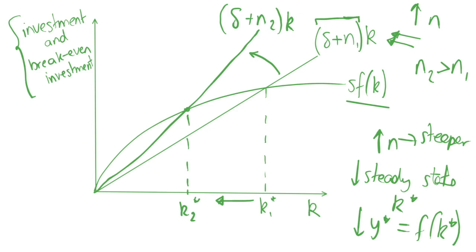Looking at the dynamics, if we're originally at k1 star and we had a steady state here, we now pivot the break-even investment line to here. Now at our k1 star we have depreciation and investment all the way up here.